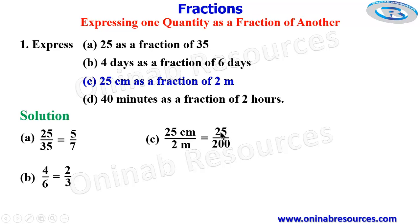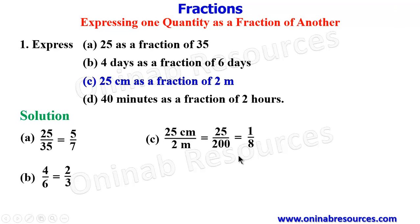So we now have the fraction as 25 over 200. Simplifying this, 25 divides both 25 and 200, and that's going to give us 1 over 8. 25 goes into 25 gives 1, and 25 goes into 200 gives 8. So that's it for C.